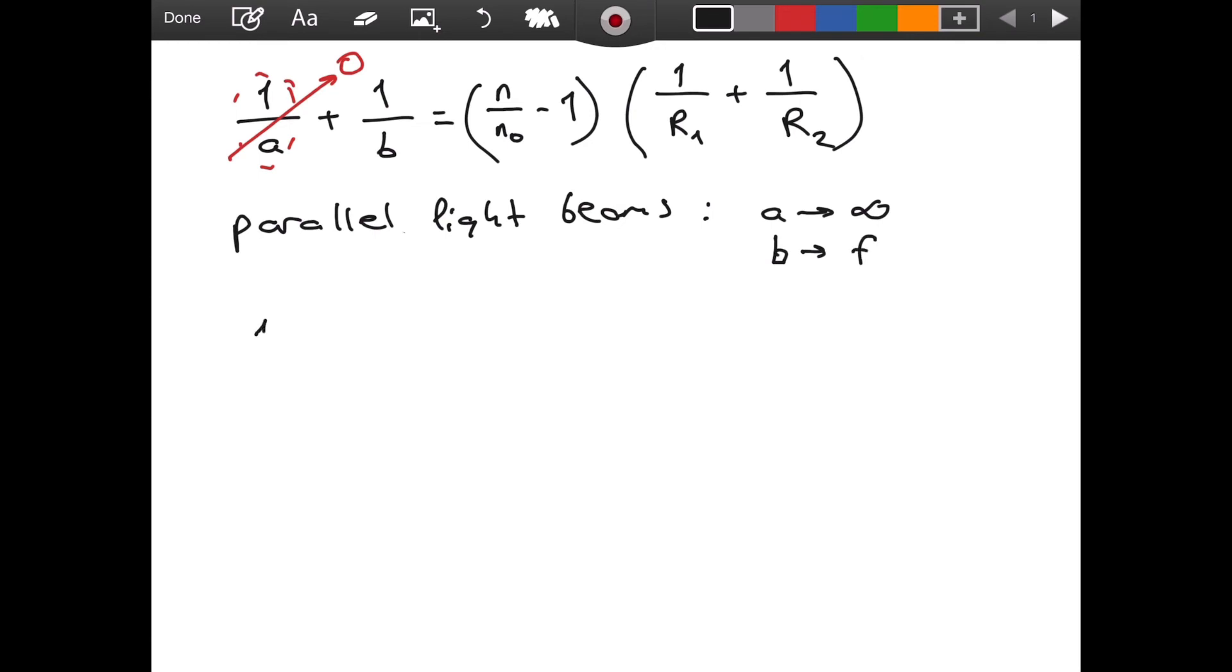So, we will get that one over f is equal to, and here we will make another substitution. In the lens makers equation, we take n0 to be one. And this is basically the refractive index of air. It isn't exactly one, but it is very close to one. And for practical purposes, for simplicity, we often write n0 is equal to one.